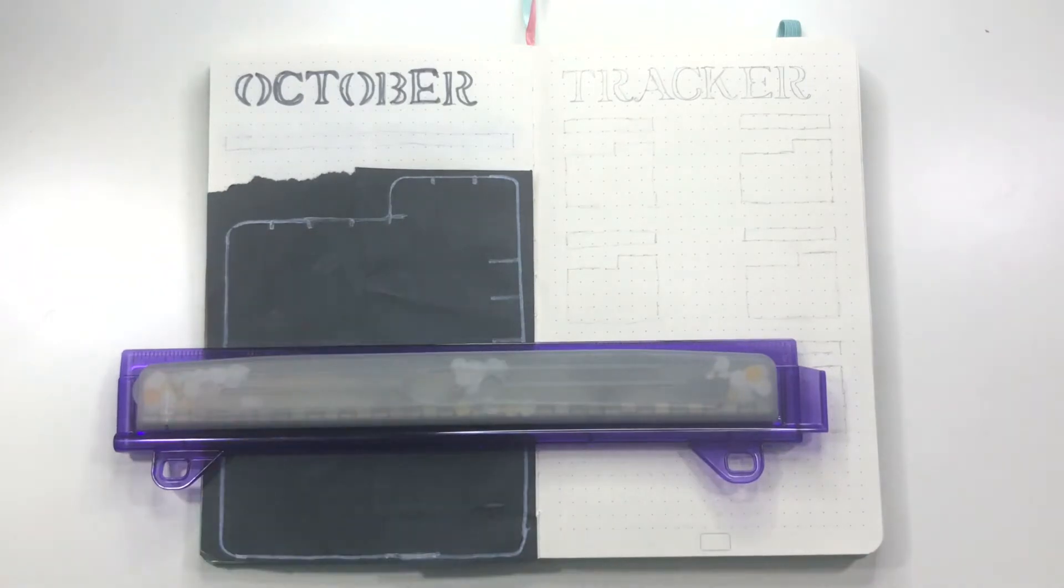And then basically I took my white marker and I made my little calendar. You guys know I don't like two-page calendar spreads because I don't use them.